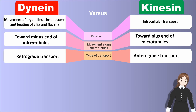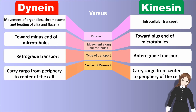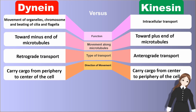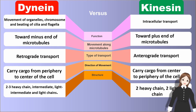Type of transport: kinesin has anterograde transport, but dynein has retrograde transport. Direction of movement: kinesin carries cargo from center to periphery of the cell, but dynein carries cargo from periphery to center of the cell. Structure: kinesin has two heavy chains and two light chains, but dynein has two or three heavy chains, intermediate, light intermediate, and light chains.